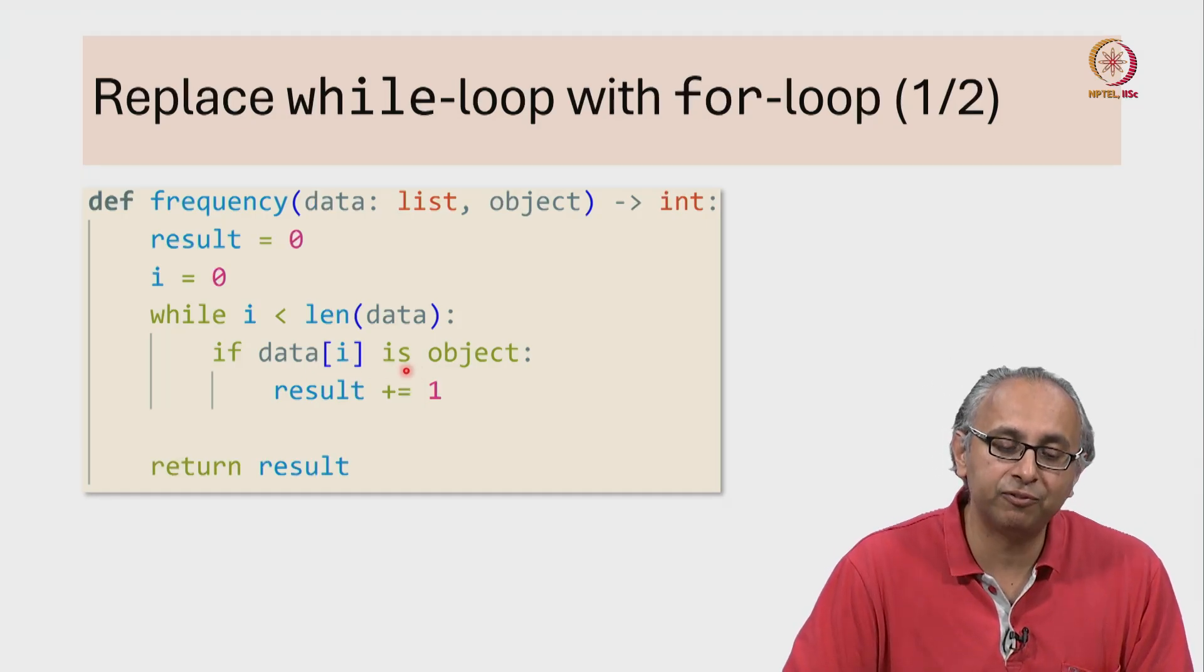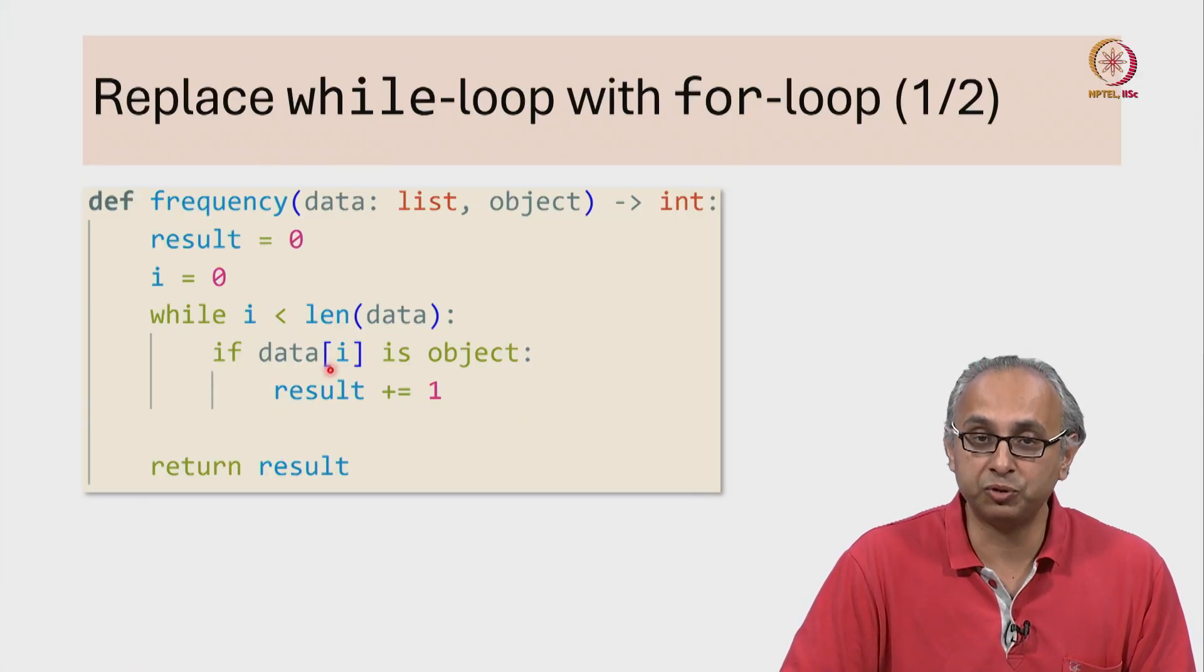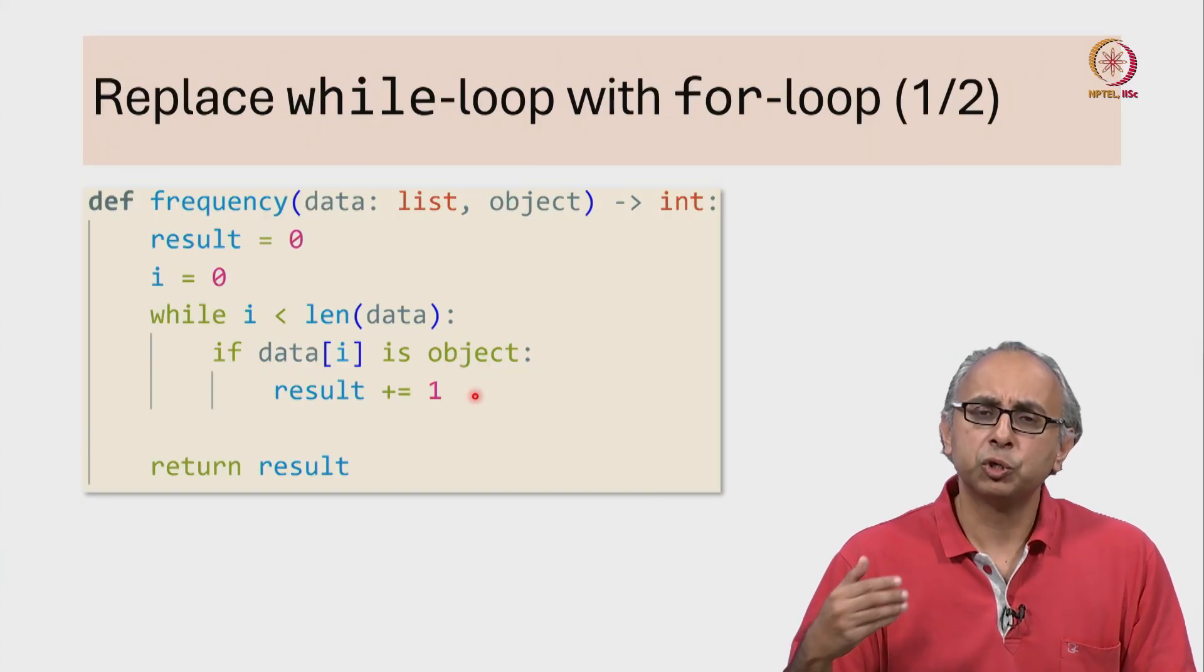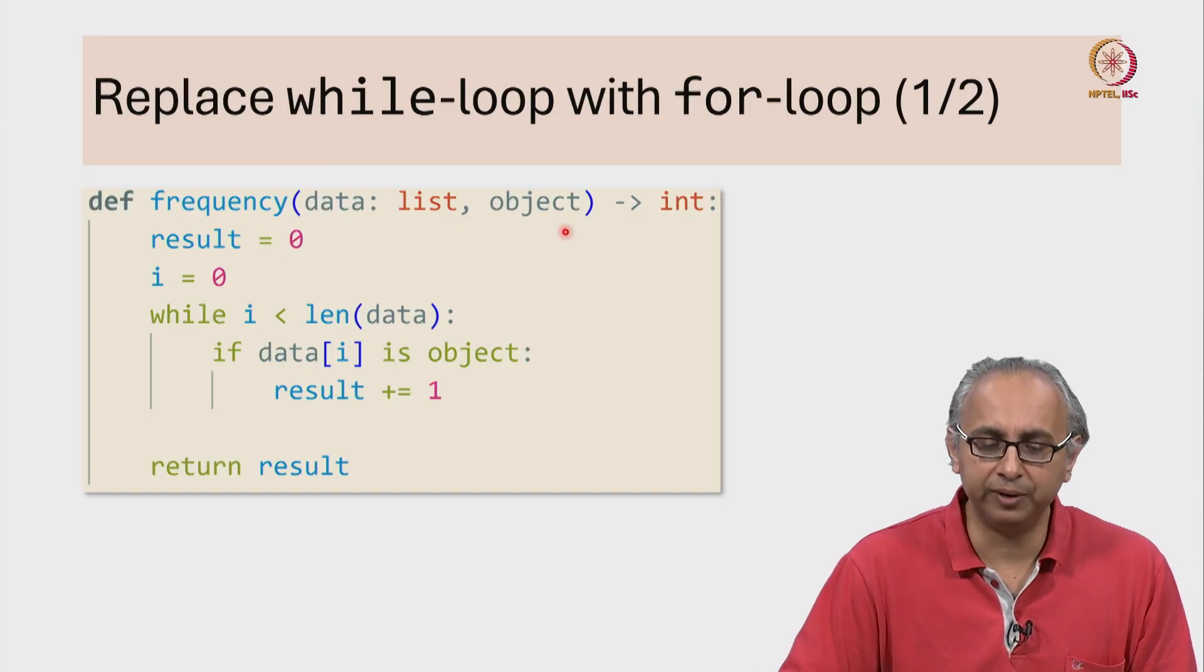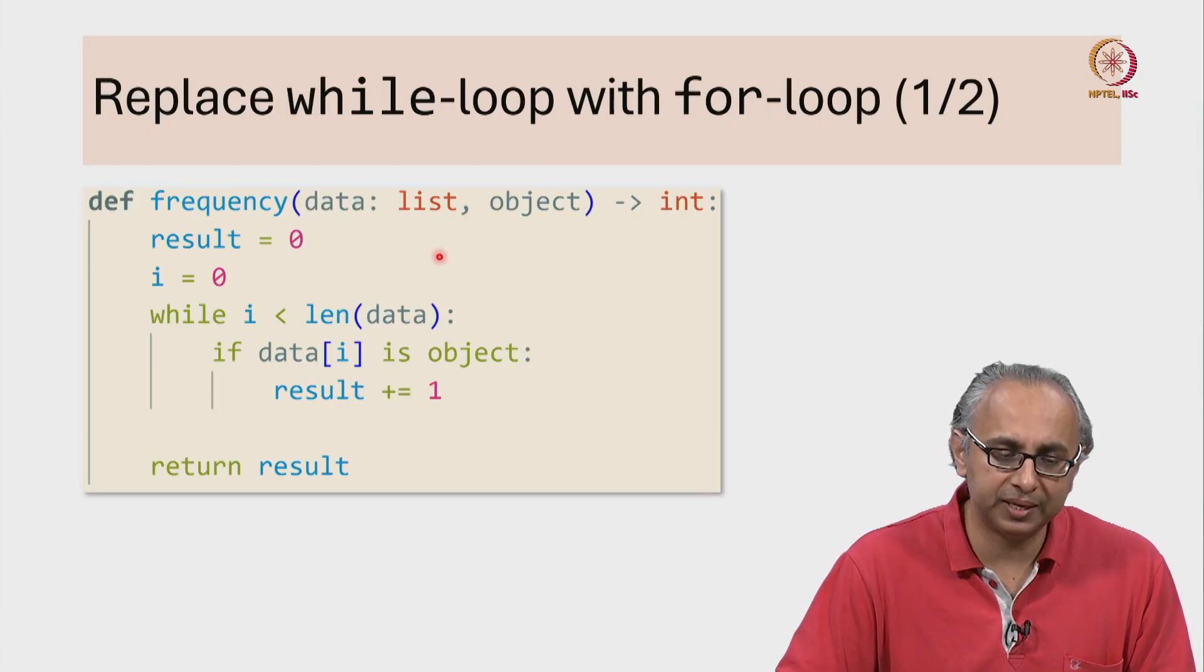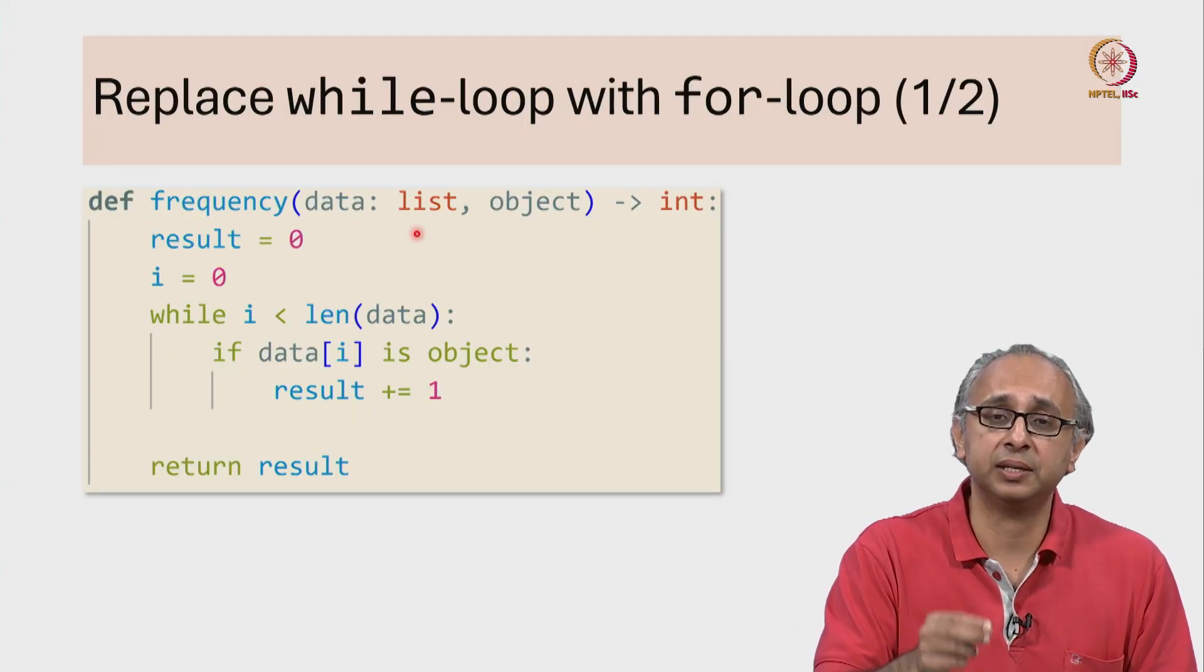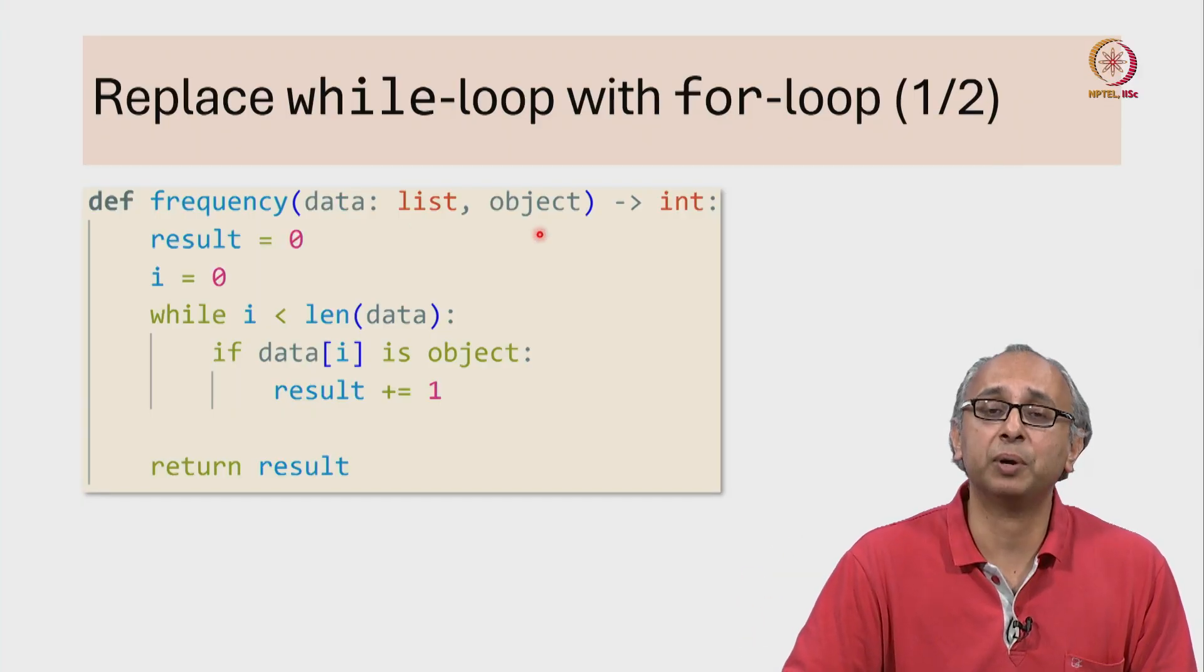But here, we are checking if this object is precisely the same as the object that appears at the ith element in this list. And if it is, we increase the result by 1. So this function seems to be counting how often this object appears in this list—how often this precise object appears in this list, not just another object with the same value as the given one.